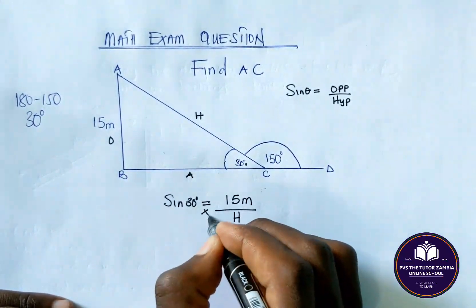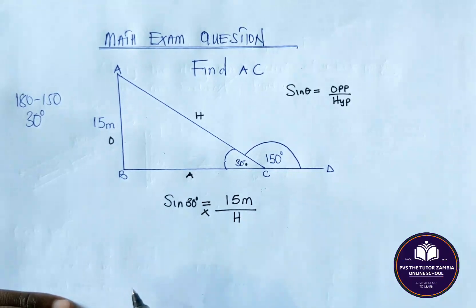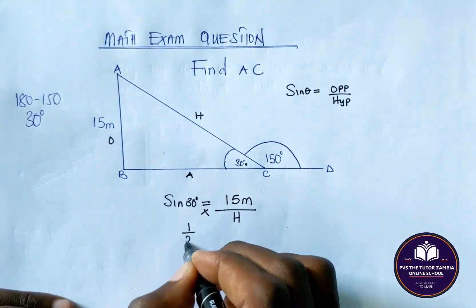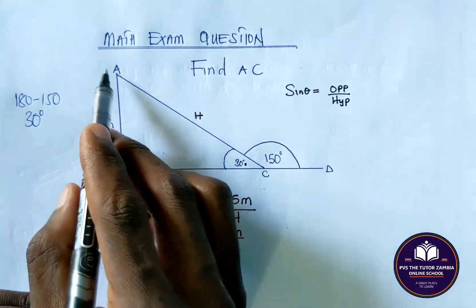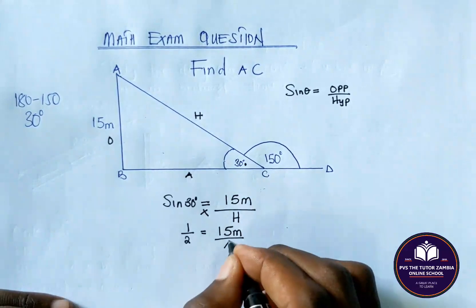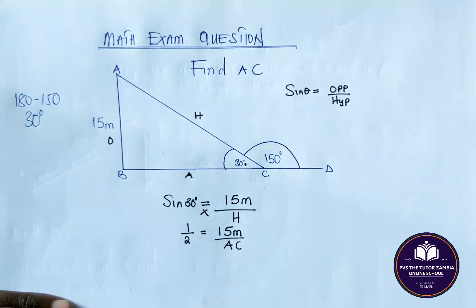When you cross multiply, what is sin 30? Sin 30 is just 0.5. You need to know these ratios, by the way. This is just half, which is equal to 15 meters. Now H is the same as AC, so we can just replace there and put AC.